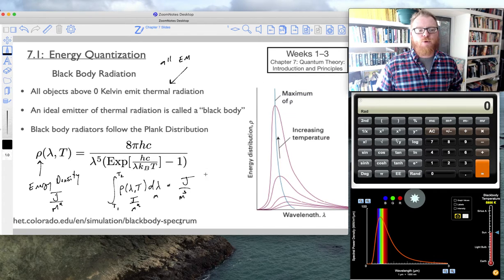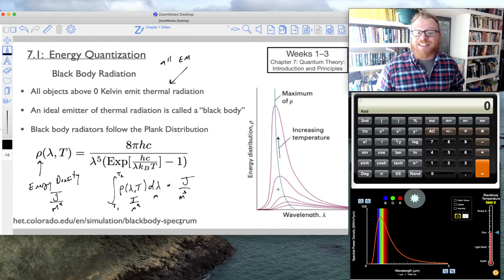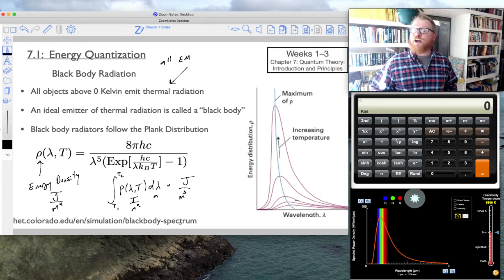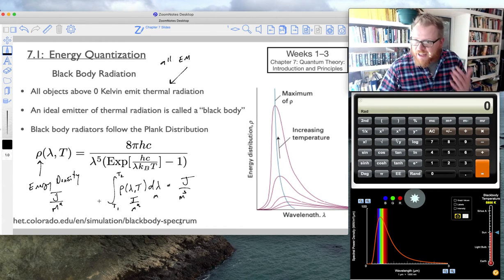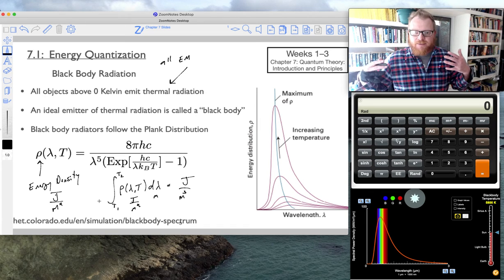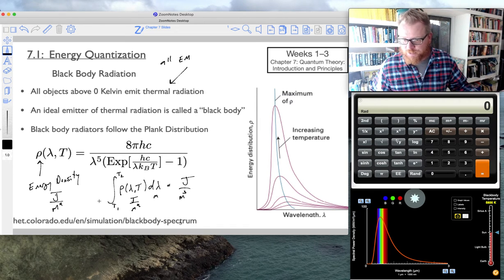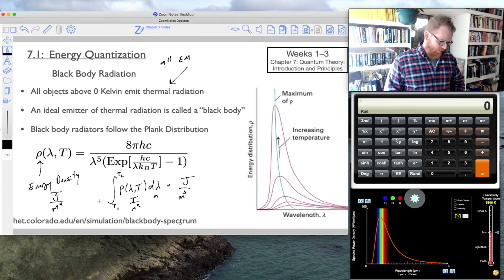These graphs right here are the Planck distribution that have been plotted. And so what this integral means is if I were to take the area under one of these curves, which is the same as taking this integral, I get joules per meter cubed. I get the energy density.